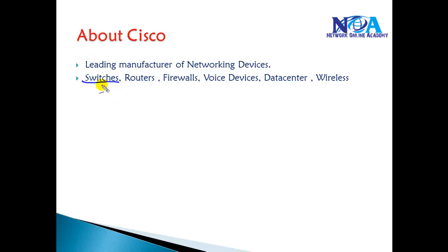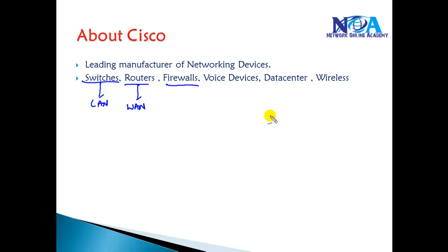Routers provide WAN connections, and firewalls are security devices which provide secure access to the internet. There are also voice devices like IP phones, data center devices like servers, and wireless devices like access points. Cisco is a leading manufacturer of all these devices, and as we are doing a CCNA course, we'll get into a basic overview of Cisco.